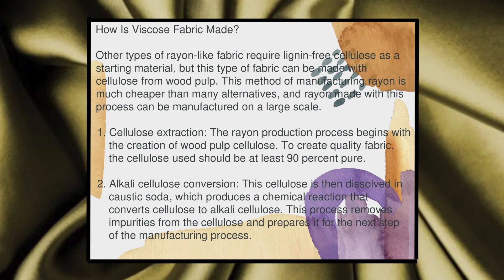How is viscose fabric made? Other types of rayon-like fabric require lint-free cellulose as a starting material, but this type of fabric can be made with cellulose from wood pulp. This method of manufacturing rayon is much cheaper than many alternatives, and rayon made with this process can be manufactured on a large scale.